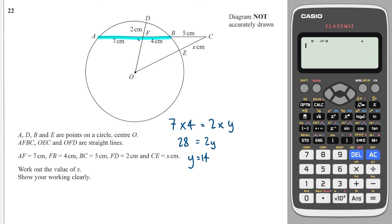OK, so if Y is 14, then the whole diameter is 14 plus 2, so the diameter is 14 plus 2, which is 16, so therefore the radius is equal to 8. OK, so we know the radius is equal to 8.